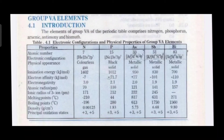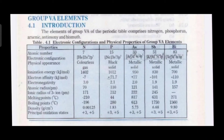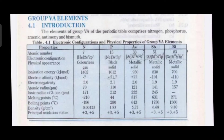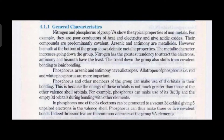The elements of group 5A are nitrogen, phosphorus, arsenic, antimony, and bismuth. They have five electrons in the outermost orbital — two in the s orbital and three in the p orbital. The electrons in the p orbital are usually unpaired; when unpaired, the s orbital electrons can allow an oxidation state of five instead of three. However, nitrogen cannot do so. Antimony and bismuth show an oxidation state of five due to their inert pair effect.